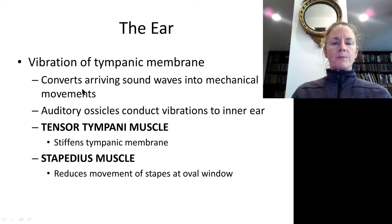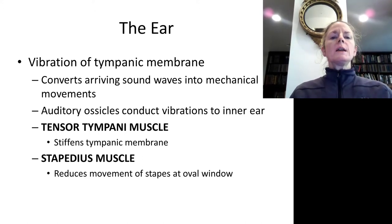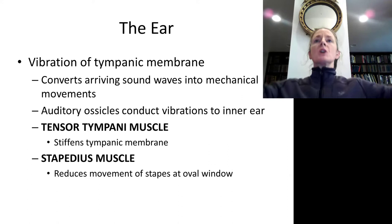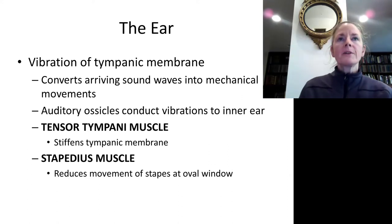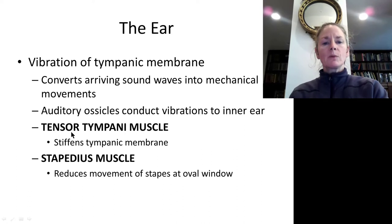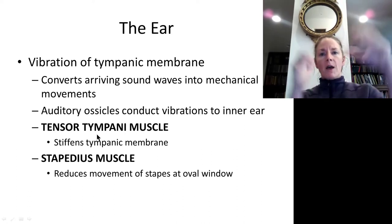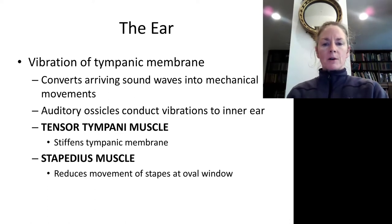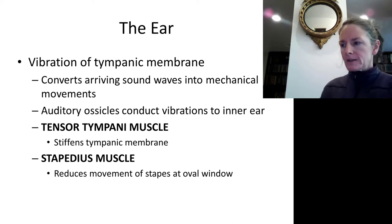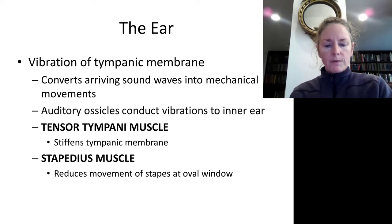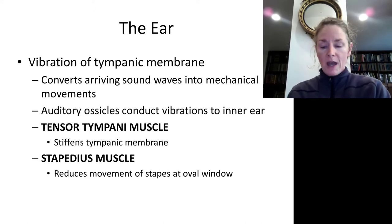The tympanic membrane vibrates the ossicles. If a sound pressure wave is so large it causes huge deflections in the tympanic membrane, it will cause huge movements in the ossicles. We have two muscles that will immediately tense up and lock those bones so they can't vibrate as much, preventing downstream damage in the inner ear where excessive pressure from the stapes would damage the very sensitive sensory receptors there.